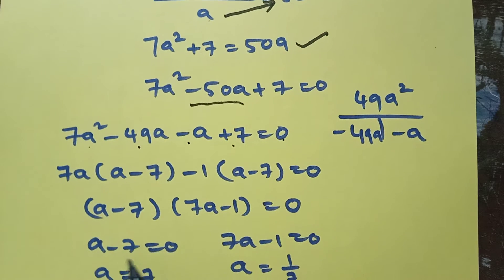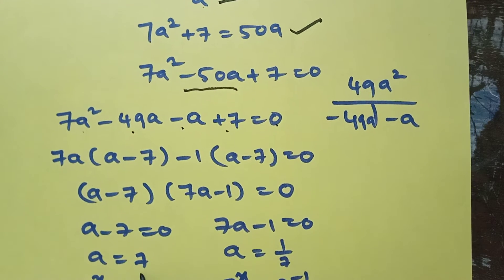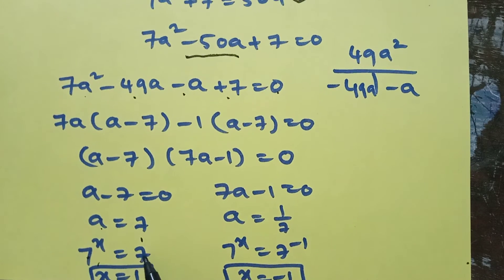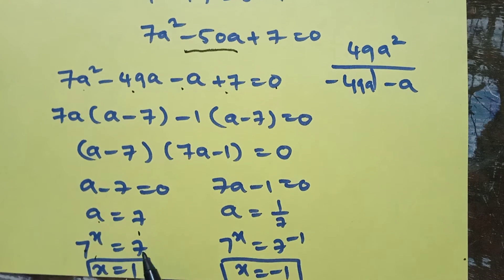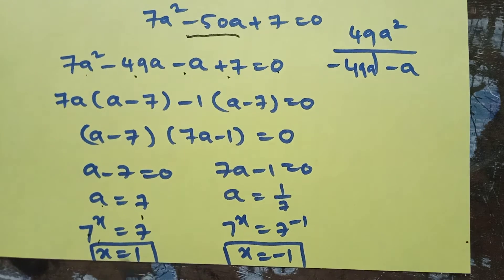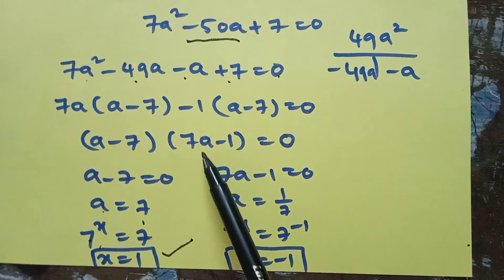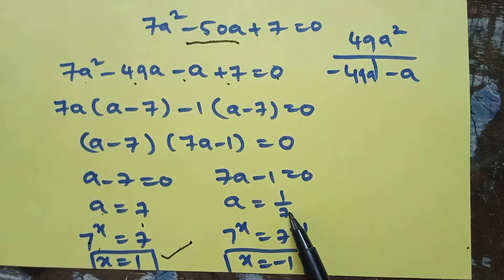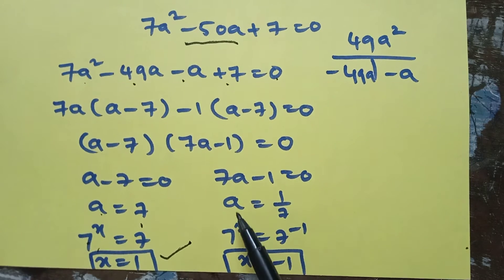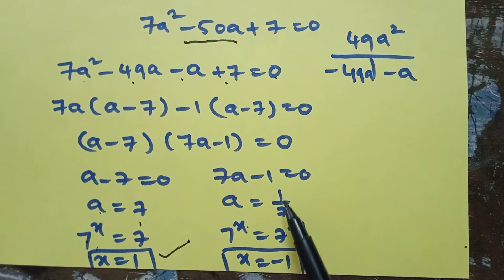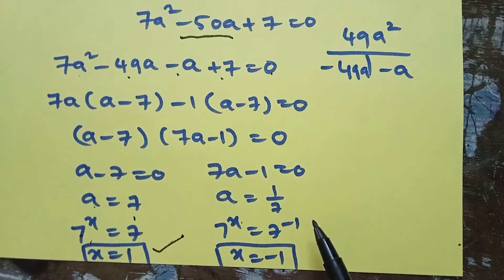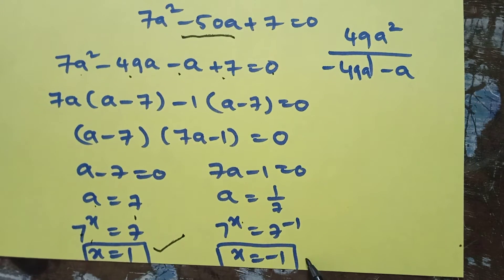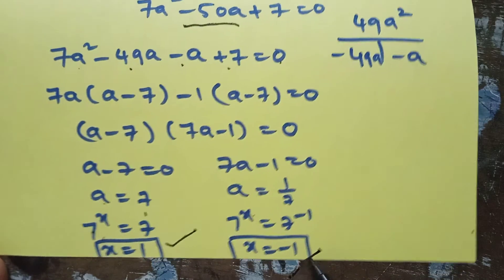So (a minus 7)(7a minus 1) equals 0. From a minus 7 = 0, a = 7. Since a = 7 power x = 7 power 1, bases are equal so x = 1. From 7a minus 1 = 0, a = 1/7 = 7 power minus 1. Bases are equal so x = minus 1.